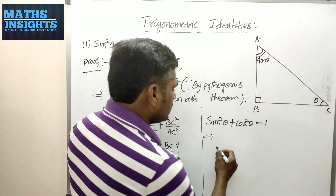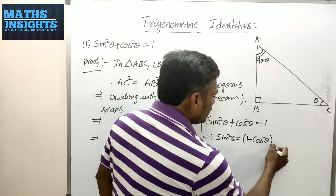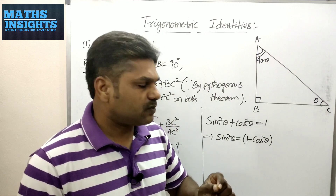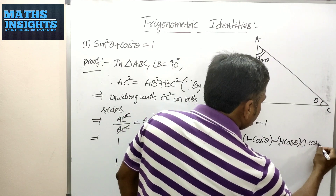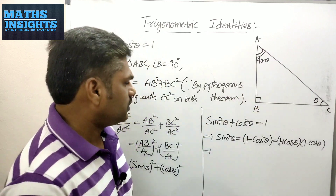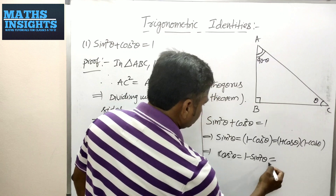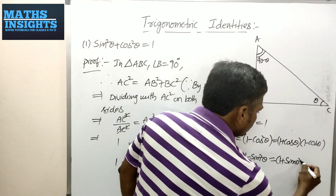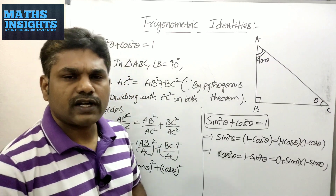You may also rearrange this identity. If you want sin²θ as the subject, move cos²θ to the other side: sin²θ = 1 − cos²θ. This is in the form a² − b², which can be written as (a + b)(a − b), where a = 1 and b = cos θ, so sin²θ = (1 + cos θ)(1 − cos θ). Similarly, if you want cos²θ as the subject: cos²θ = 1 − sin²θ, which equals (1 + sin θ)(1 − sin θ). This is the first and foremost important trigonometric identity.